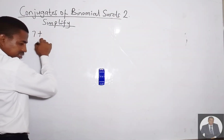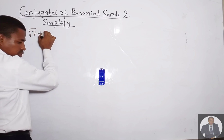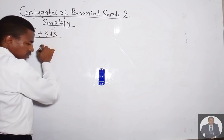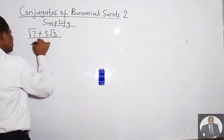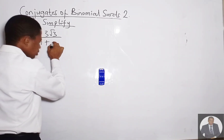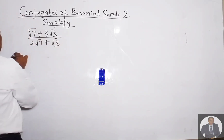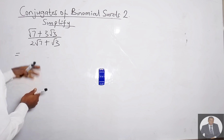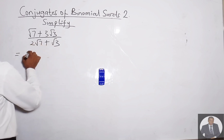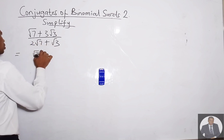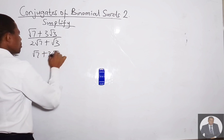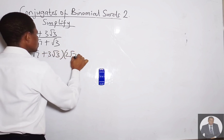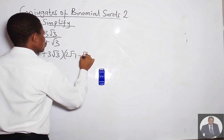Simplify (√7 + 3√3) over (2√7 + √3). The conjugate of the denominator is (2√7 − √3), so we multiply both the numerator and denominator by (2√7 − √3).